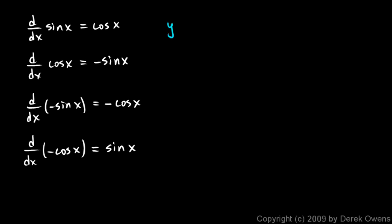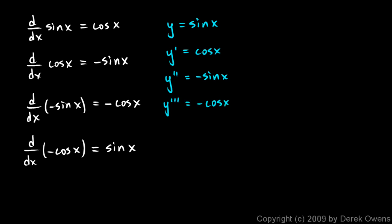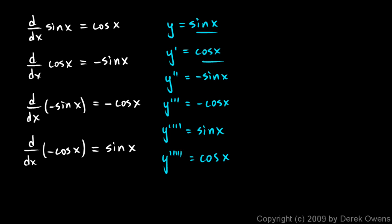We can write all of this in terms of higher-order derivatives. If y equals sine x, then y prime is cosine x, y double prime is negative sine x, y triple prime is negative cosine x, and y to the fourth is the sine function again. The fifth derivative would be cosine x, and you see the pattern: sine, cosine, negative sine, negative cosine, sine, cosine, negative sine, negative cosine — that pattern continues indefinitely.